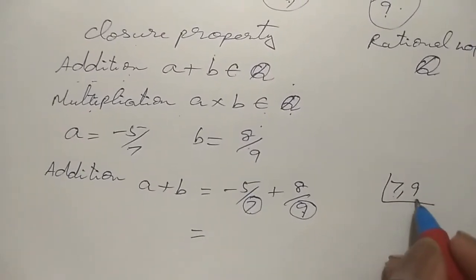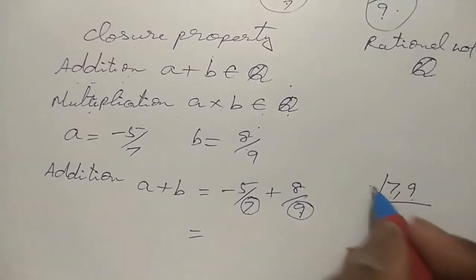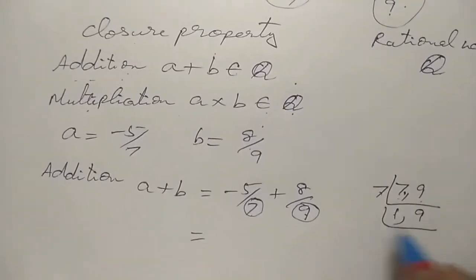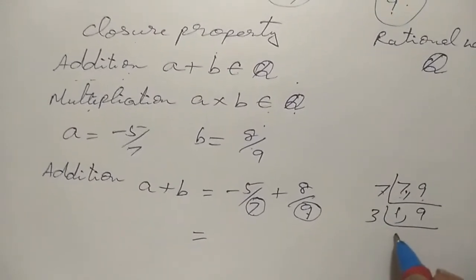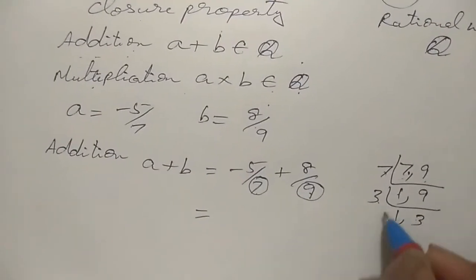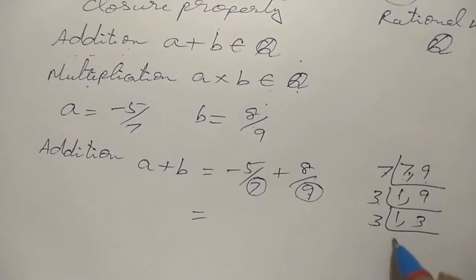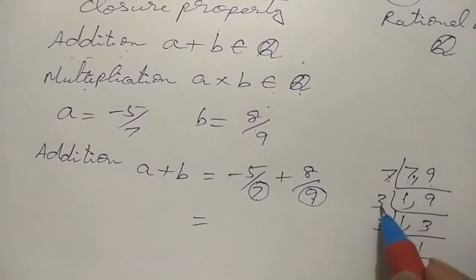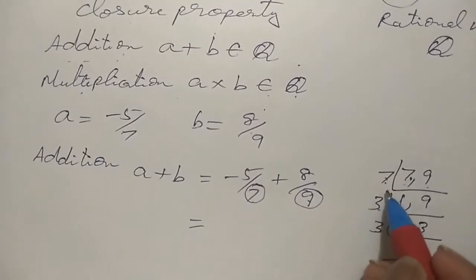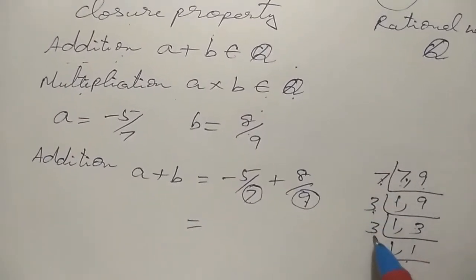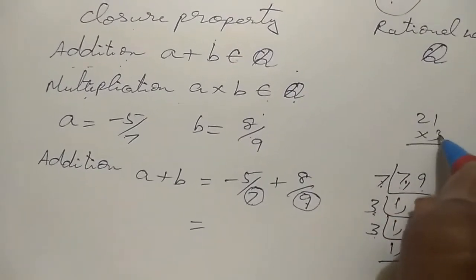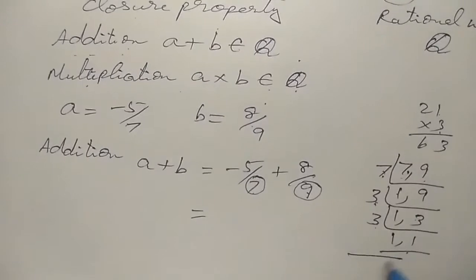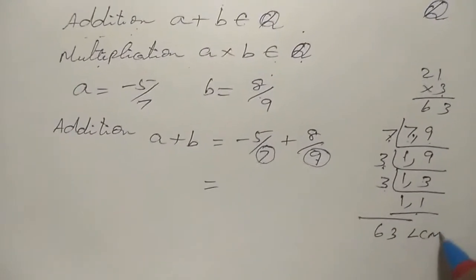We take the LCM of 7 and 9. 7 table: 7 once is 7, and 9 remains. Going with 3 table: 1 comma 9. So the LCM is 7 times 3 times 3, which is 63.